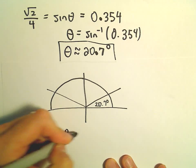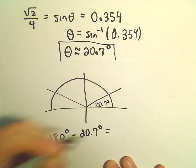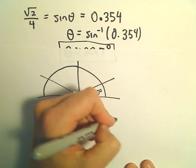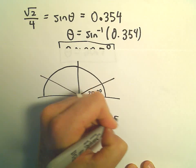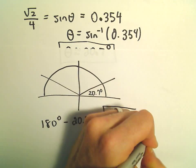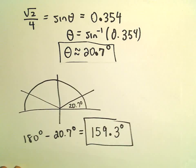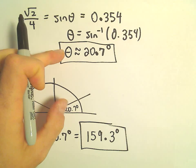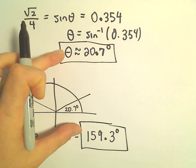We'll subtract away twenty point seven degrees. If we subtract twenty, that would give us one sixty. We subtract another point seven, that should leave us with one fifty nine point three degrees. So those would be approximately our two possible angles: twenty point seven degrees and then one fifty nine point three degrees.